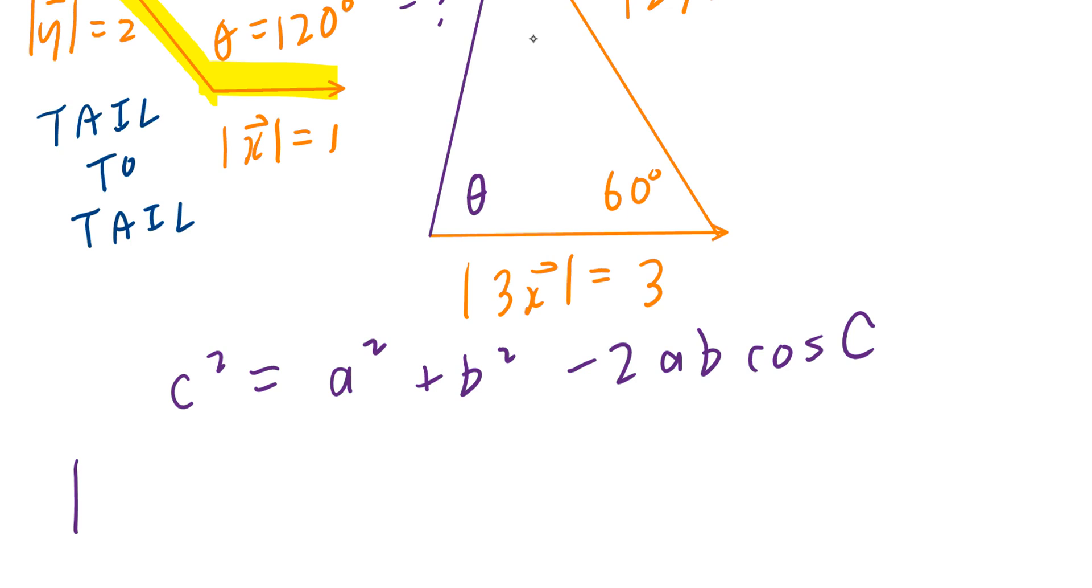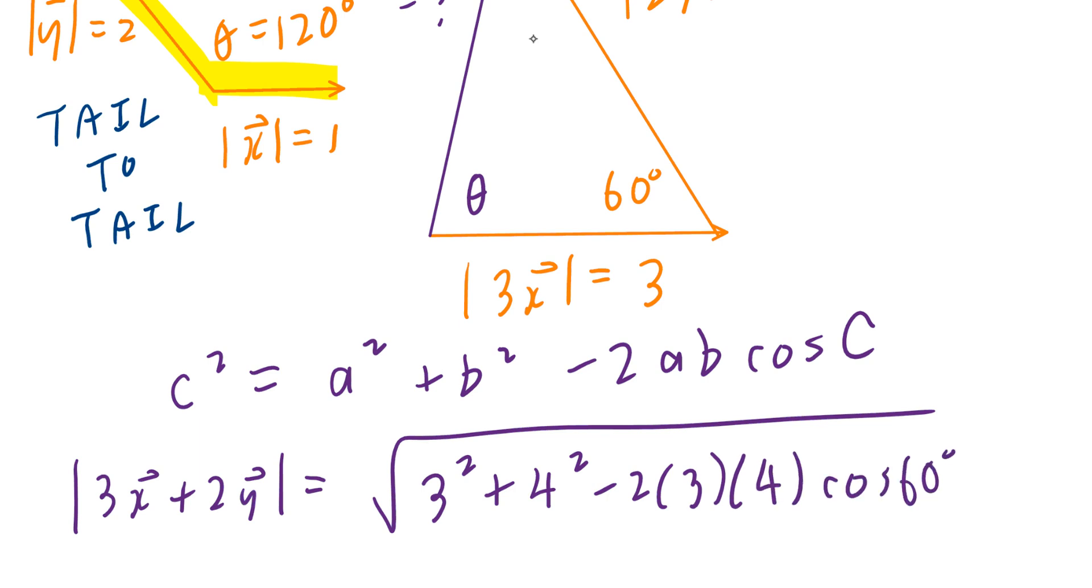C squared equal to a squared plus b squared minus 2 times a times b cosine c. So in this problem, it's going to be the magnitude of 3x plus 2y. And the opposite of squaring something is to find the square root. It's going to be the square root of 3 squared plus 4 squared minus 2 times 3 times 4 cosine 60 degrees.